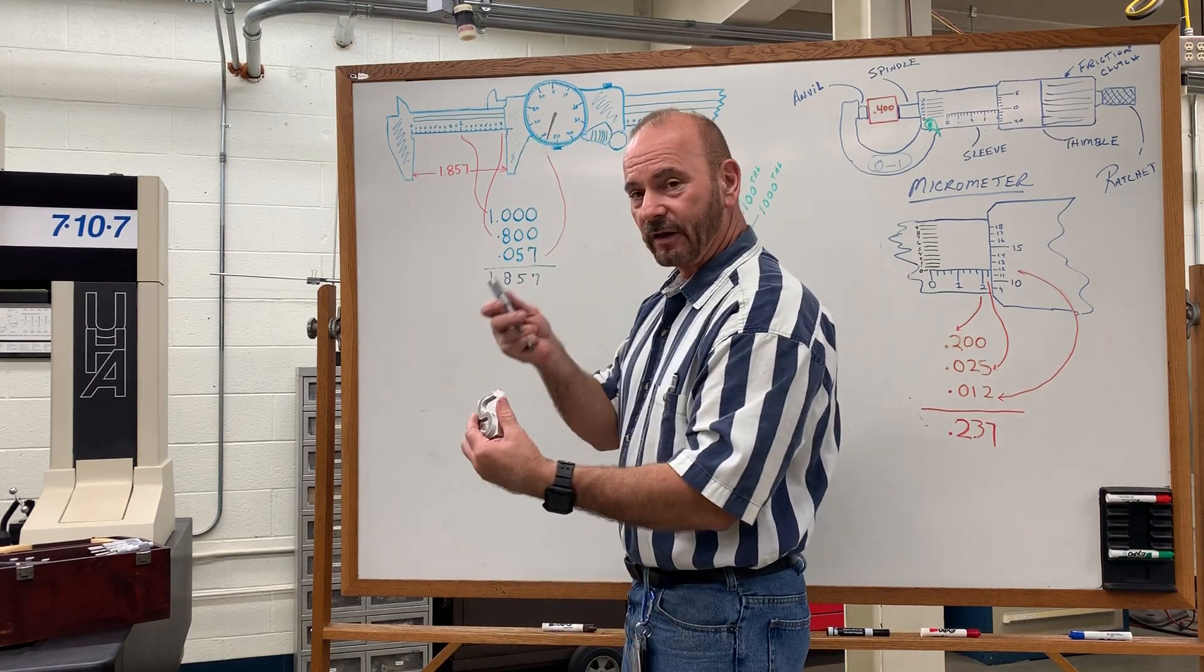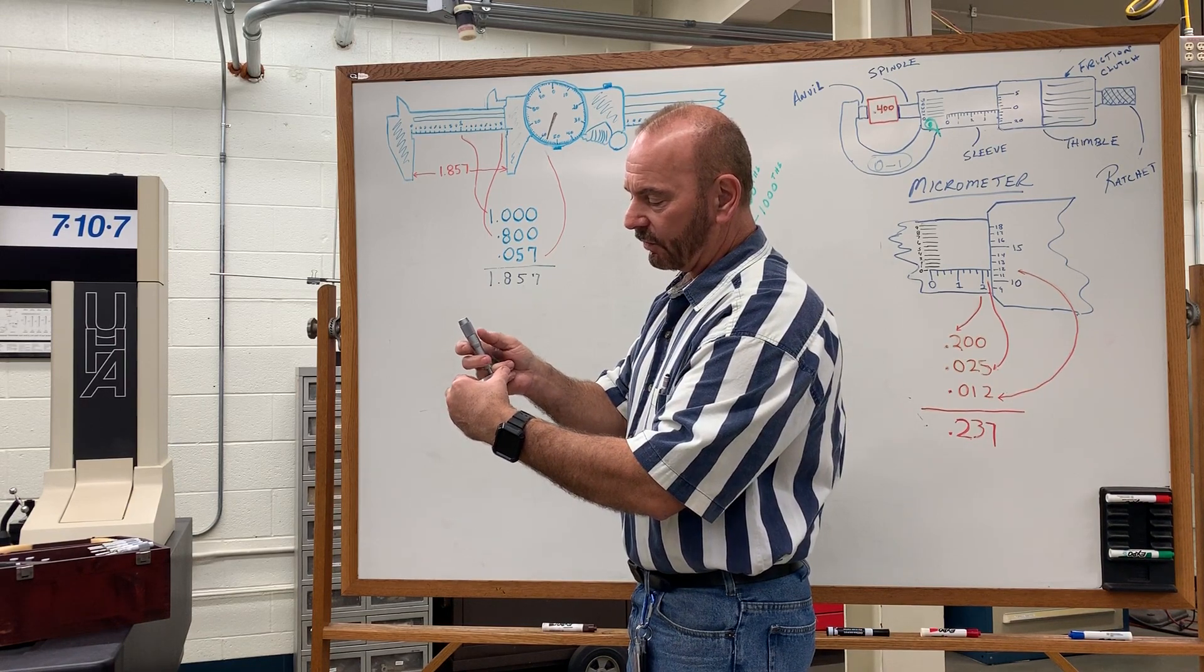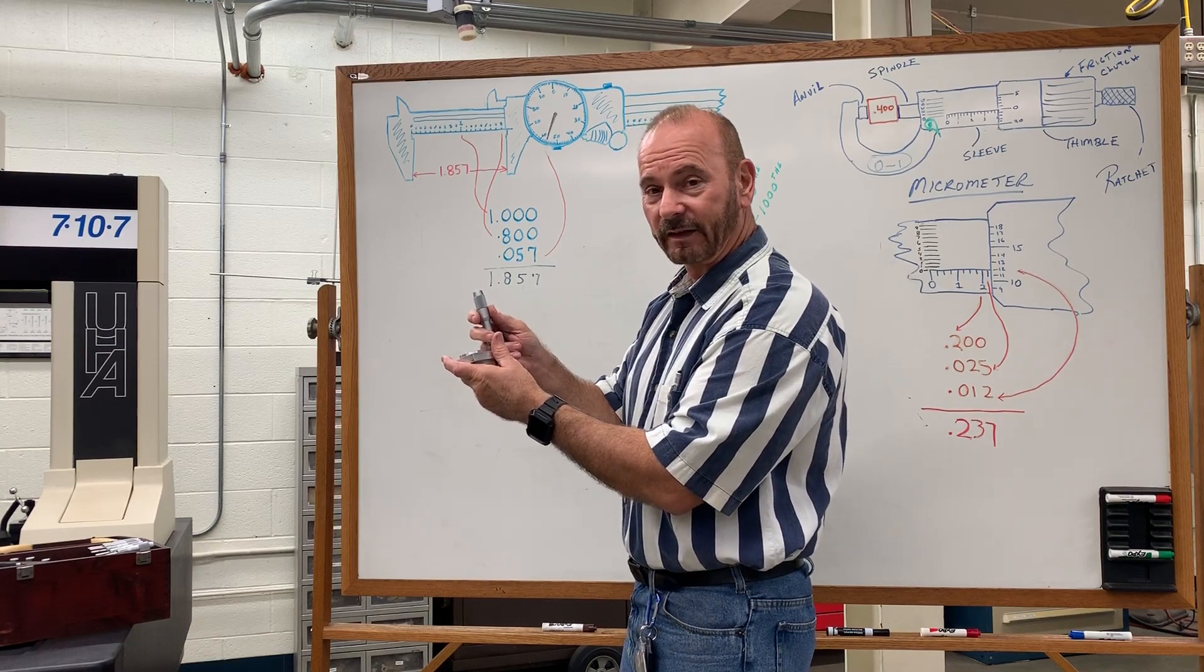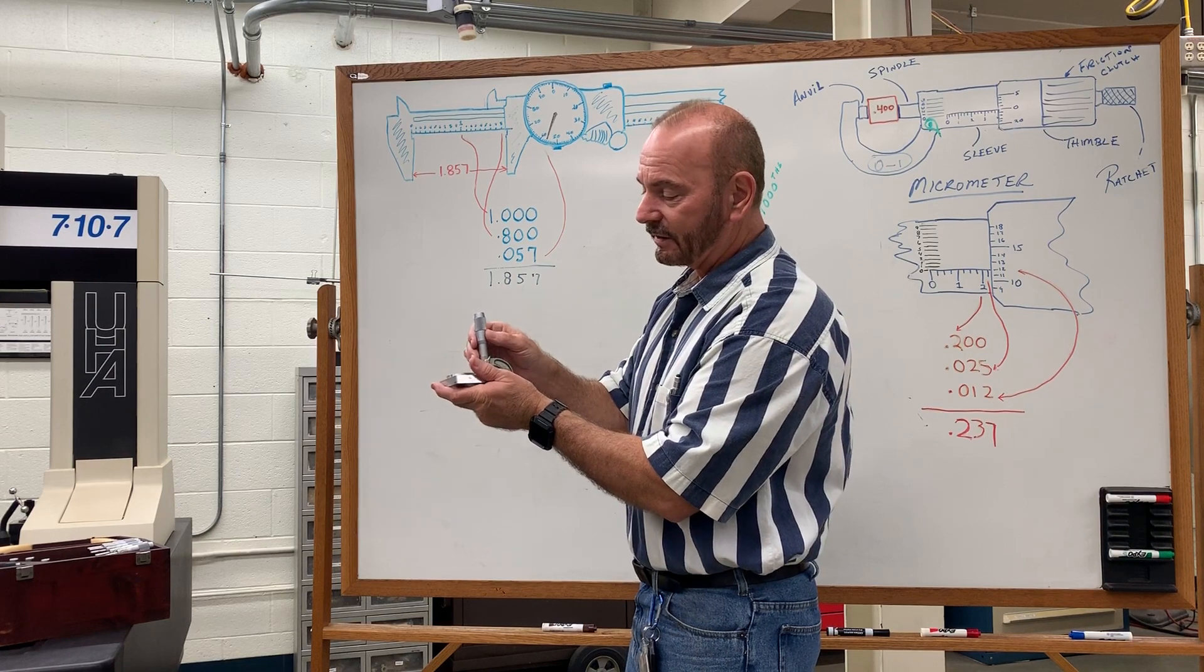You'll take your micrometer and you gently place it over your part and you want to make sure that when you apply pressure for the measurement, you don't squeeze down. These are not clamps, so you don't squeeze down at all. You barely touch the surfaces.